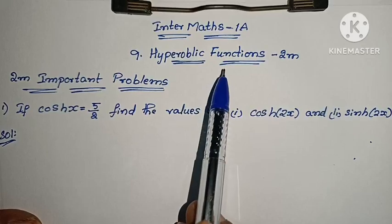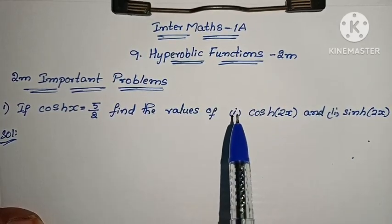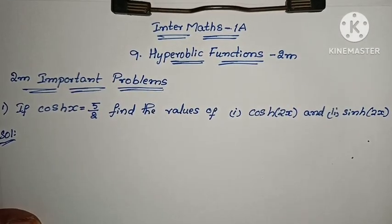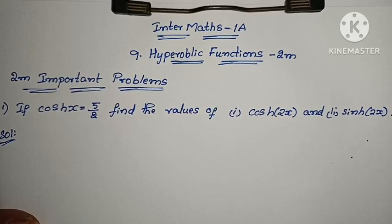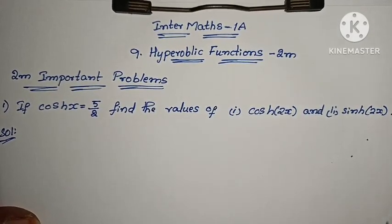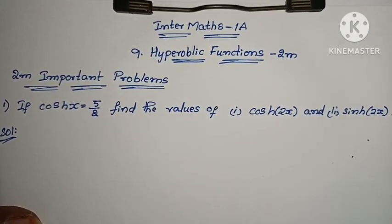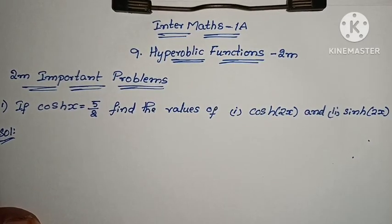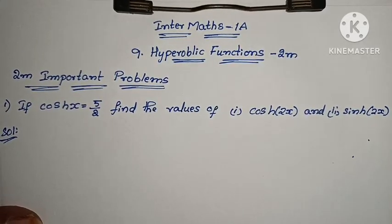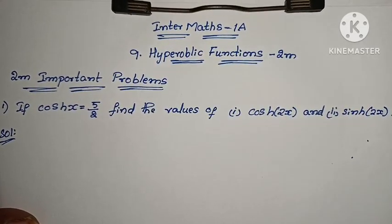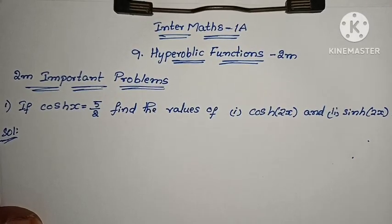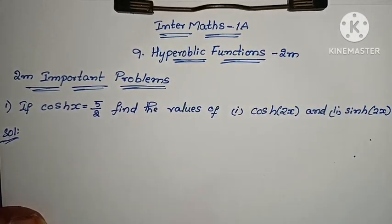Hyperbolic functions are analogous to trigonometric functions — sin, cos, tan. Here we have cosh, sinh, tanh as the hyperbolic functions. We will discuss these variables and values.